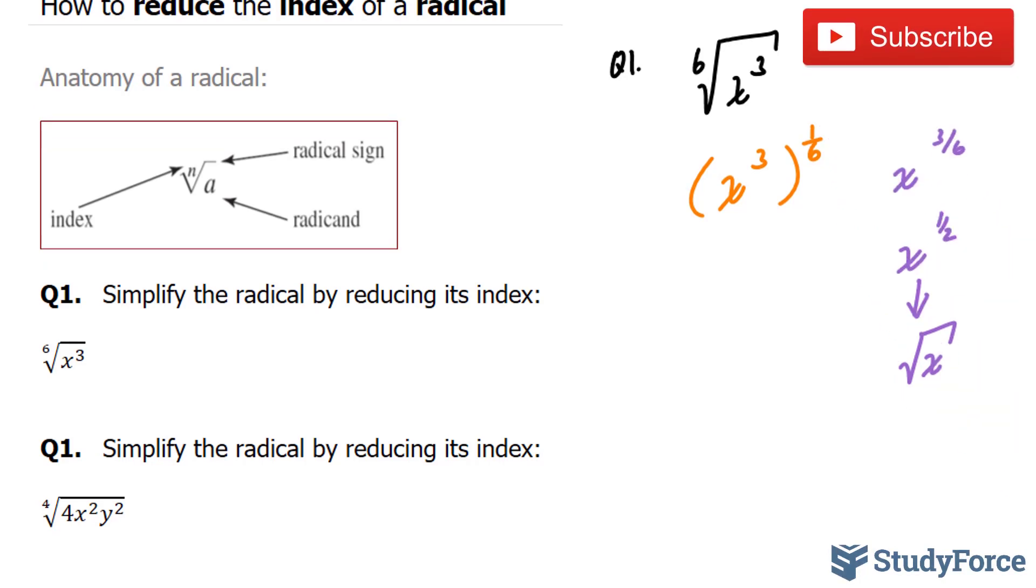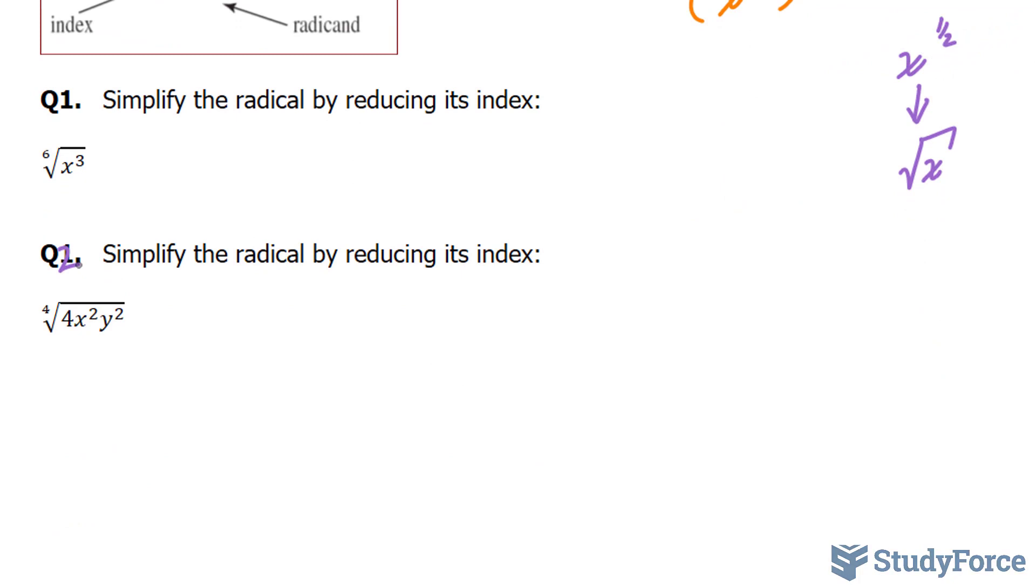Let's move on to the next question. This should say two. Simplify the radical by reducing its index. So once again, we have the fourth root of four x squared y squared.